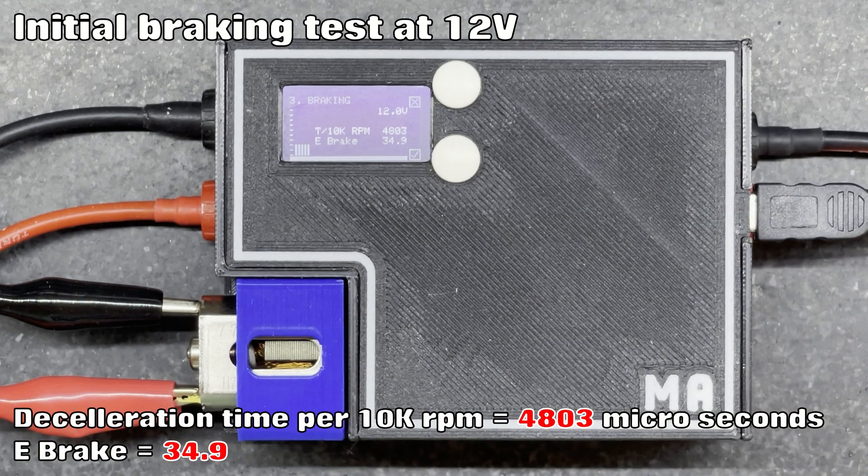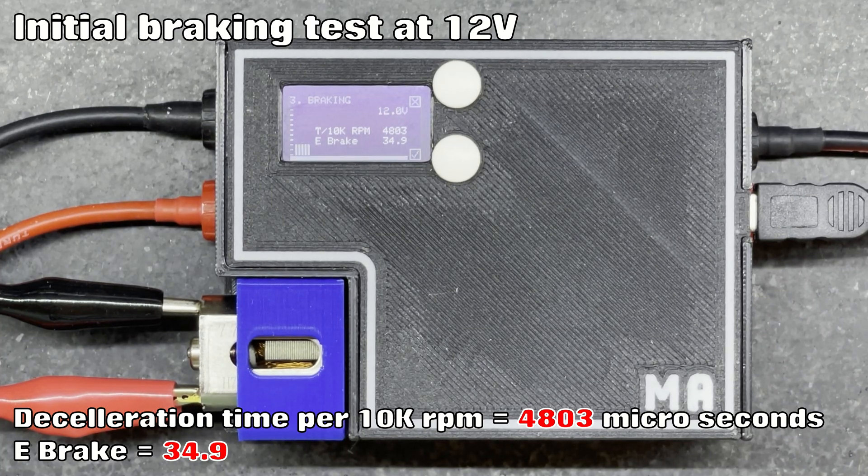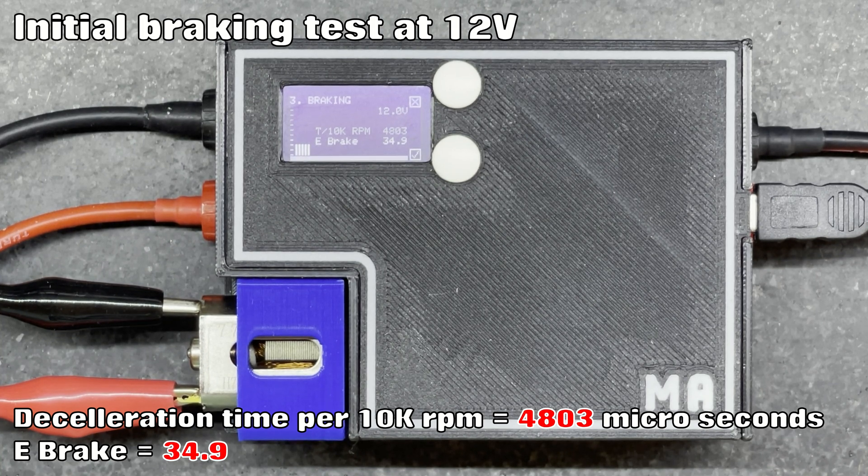There we go. So 4803 microseconds per 10,000 RPM with an e-brake figure of 34.9.